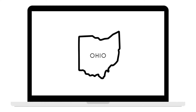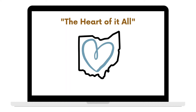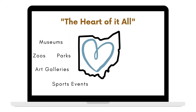This is the state of Ohio. Years ago, Ohio adopted a slogan calling itself the heart of it all, both because its shape looks like a heart, and because Ohio is home to a variety of things all people love, including activities like museums, zoos, parks, art galleries, and sports events.